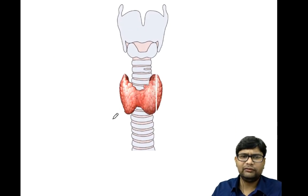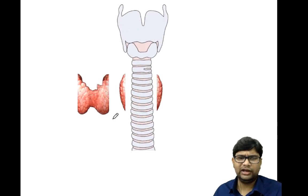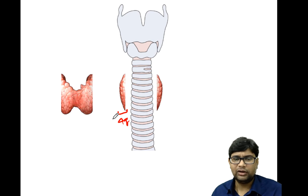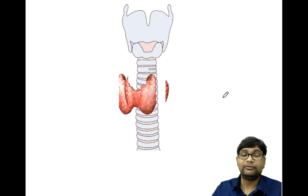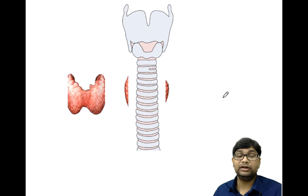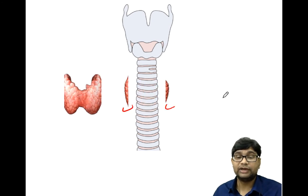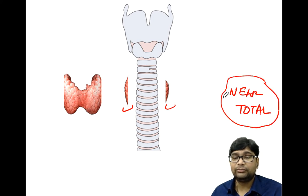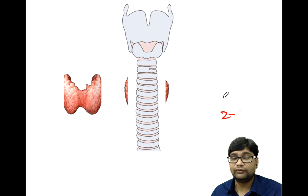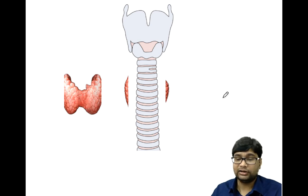There are modifications in which we leave 4 grams of thyroid on each side — this is known as subtotal thyroidectomy. Sometimes we only leave 2 grams on both sides, which is known as near total thyroidectomy. In practice, near total and subtotal are the same; we leave around 2 to 4 grams of thyroid, and that is known as subtotal thyroidectomy.